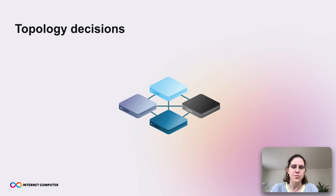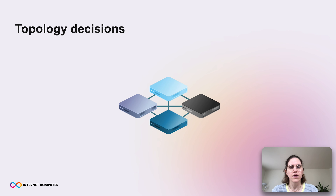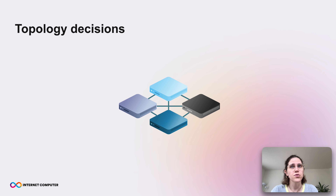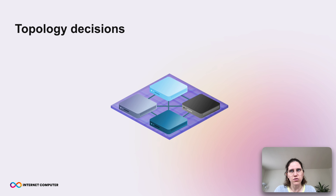Another reason why we need governance is that there need to be some decisions about the so-called topology. As we've already mentioned, the Internet Computer is a distributed protocol run by multiple nodes. Each of these nodes with different colors is operated by a different person and is physically located in a different data center. These nodes talk to each other to achieve consensus because they all have the same state of the Internet Computer, and such a collection of nodes that achieve consensus is called a subnet on the Internet Computer.